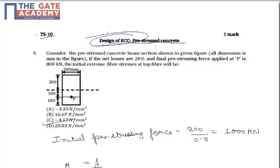Here a pre-stressed cross section is given having width 300 mm and depth 400 mm, and pre-stressing force is acting at a distance of 100 mm from the centroidal axis. It is asked what is the initial extreme fiber stress if final pre-stressing force applied is 800 kN and there are net losses of 20% on initial pre-stressing force.